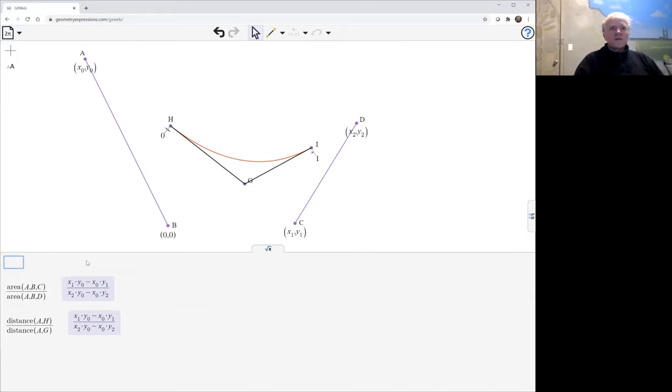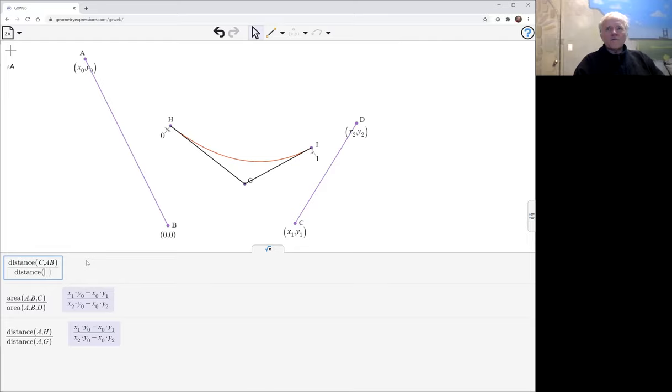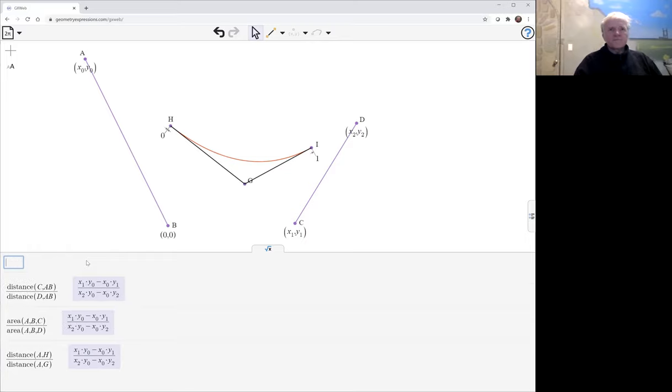And you can see, yes indeed, those are the same. And so therefore, the distance from C to A, B, which is the altitude of that triangle, over the distance from D to A, B, again, is the same quantity.